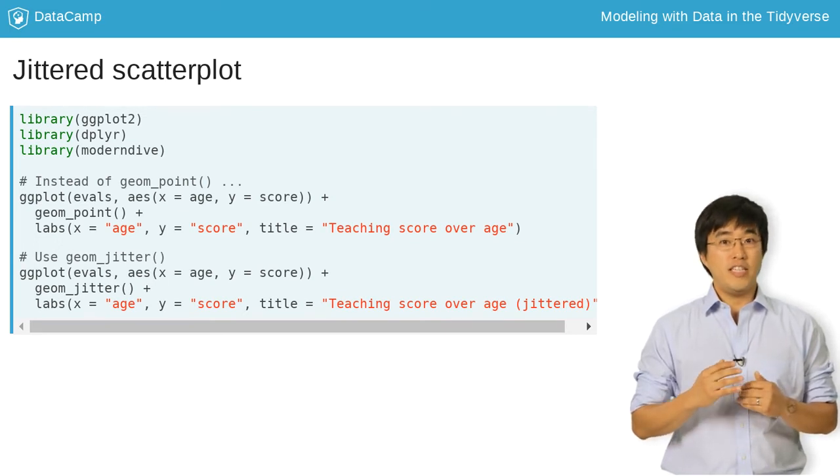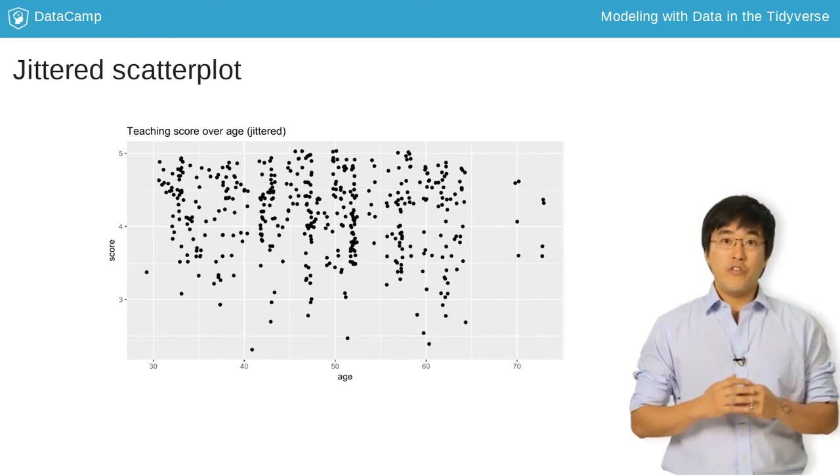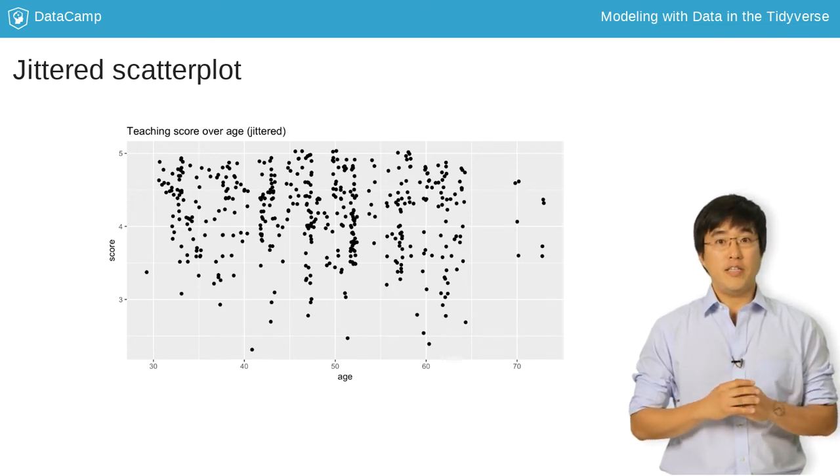Observe, there are indeed two values at age 70 and score 4.6. Other over-plotted points similarly get broken up. Note that the jittering is strictly a visualization tool. It does not alter the original values in the dataset.